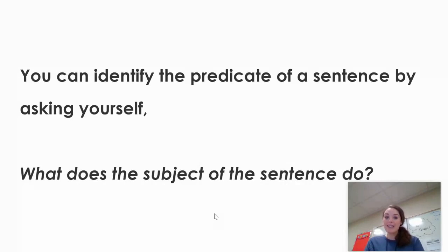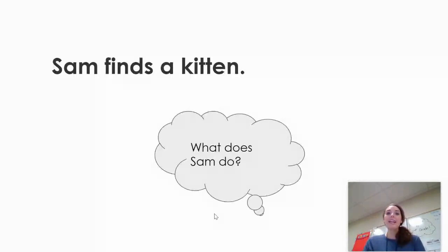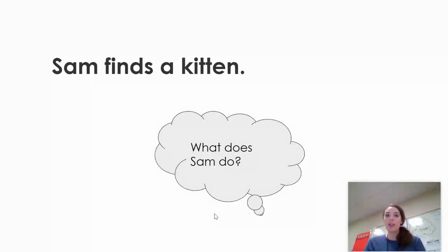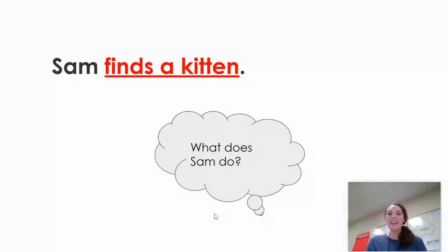Let's do some practice sentences together. Here is our first sentence: Sam finds a kitten. Well, the sentence is about Sam. He is the subject, Sam. To find the predicate, I'm going to ask myself the question, what does Sam do? What is Sam doing in this sentence? Sam finds a kitten. So that is the predicate — finds a kitten. Underlined in red, that is the predicate of our sentence.